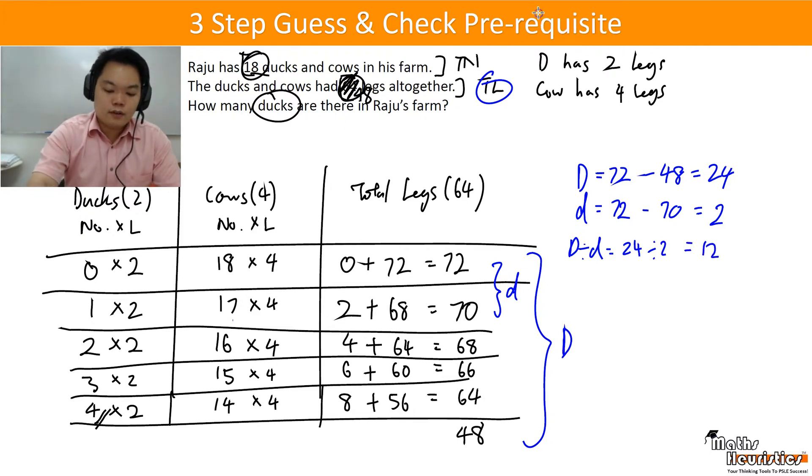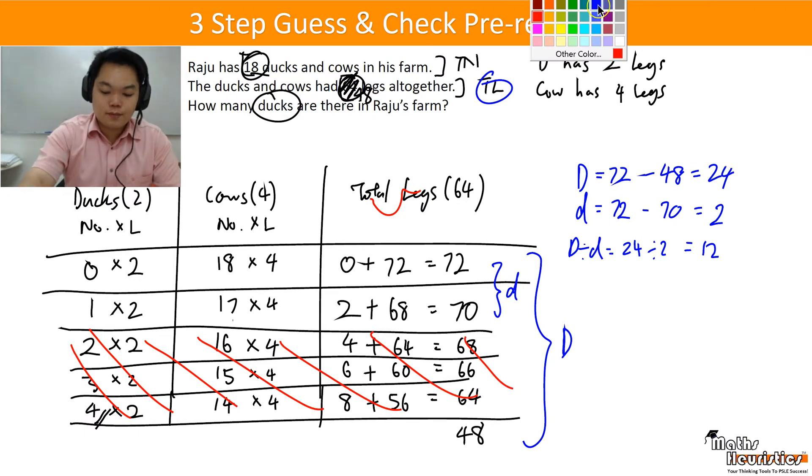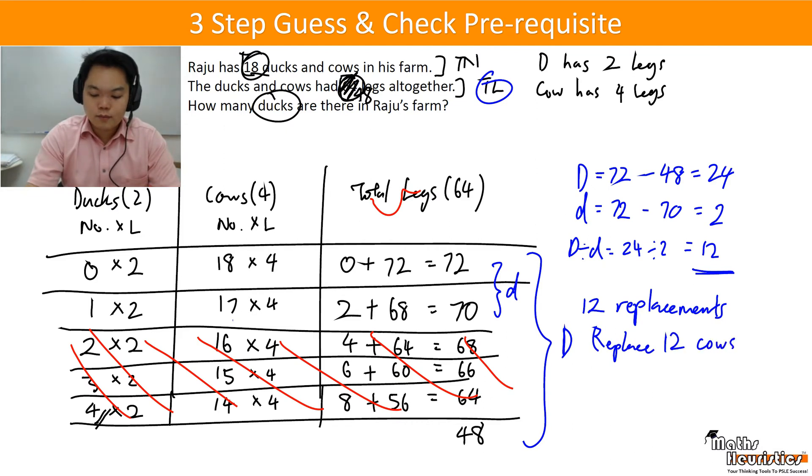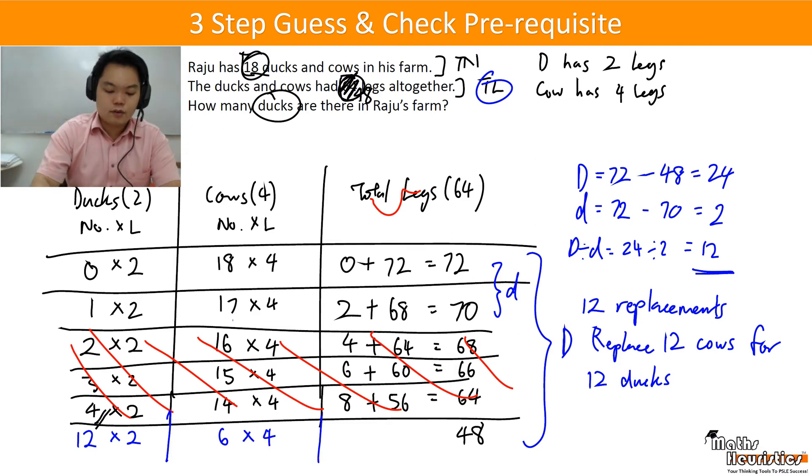So in actual fact, all these other rows are redundant. I do not need them in the first place. And what does this 12 represent? This 12 represents that you need to make 12 replacements. Whereby you replace 12 cows for 12 ducks. So you are going to have 12 ducks now. And your number of cows will now be 18 minus 12 to give you 6. So then you would have 24 plus 24 to give you 48. Which is what you wanted in the first place. So the number of ducks would be 12.